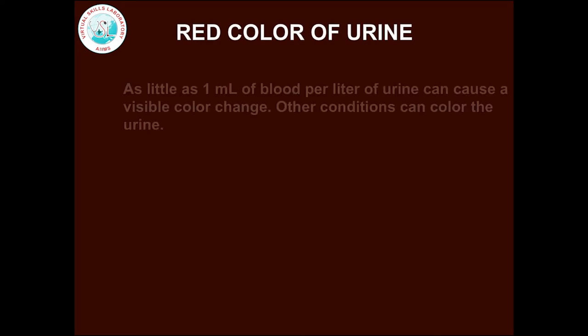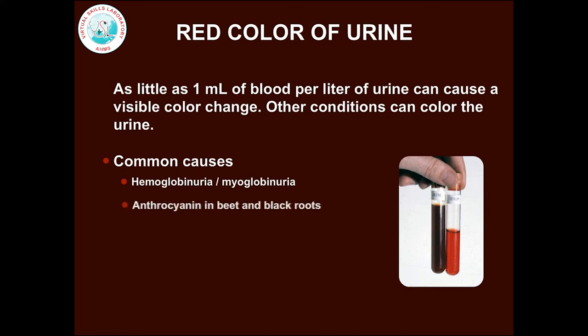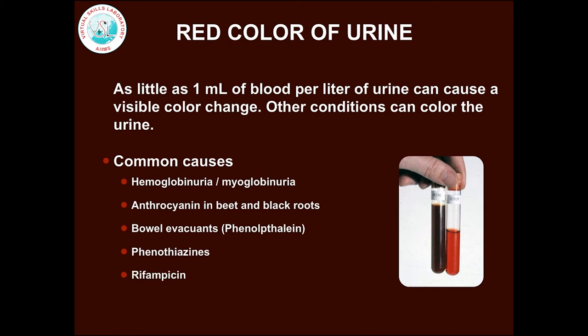One should remember that red colour of urine is not always due to hematuria. Other conditions can colour the urine, such as hemoglobinuria or myoglobinuria, anthocyanin in beetroots, bowel evacuants like phenolphthalein, phenothiazines, and rifampicin.